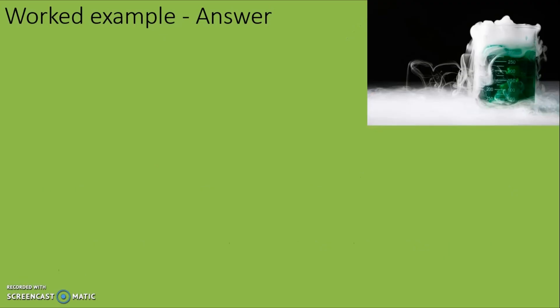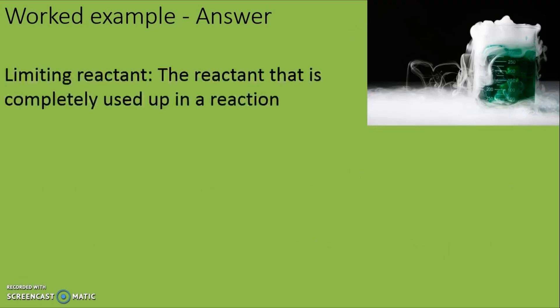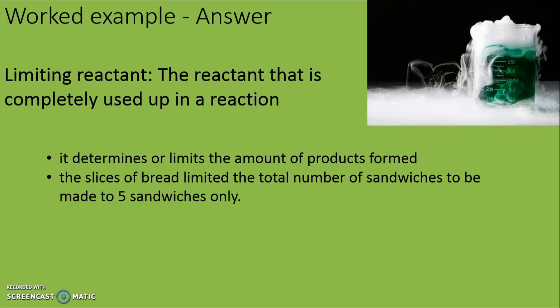Hence, in this scenario, the slice of bread will be the limiting reactant, as it is the reactant that is completely used up. So how do we identify a limiting reactant? We look for the reactant that will completely be used up in the reaction. This is called limiting reactant because it determines or limits the amount of product formed. Which is in this case, the slice of bread has limited the total number of sandwiches to 5 sandwiches only. The reactants that are not used up are called the excess reactants.